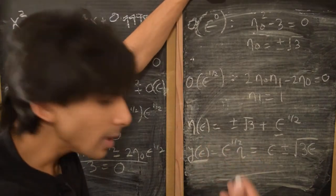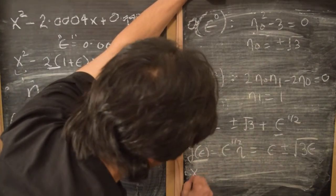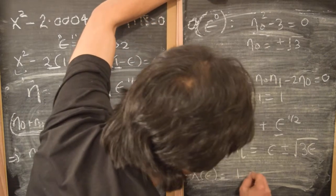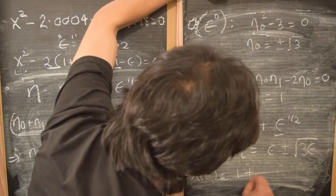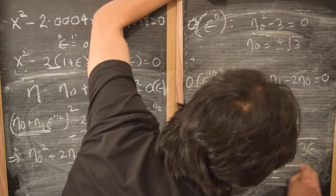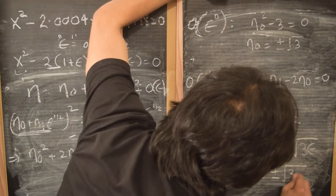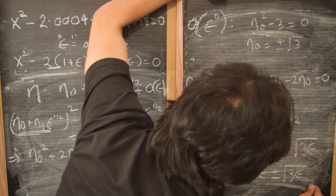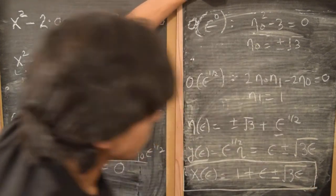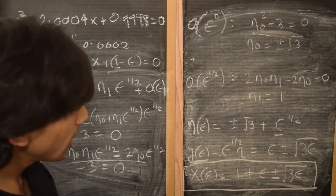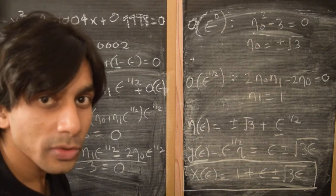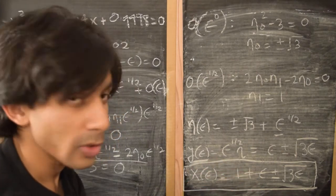Going one step back, we had defined y = x − 1, and therefore x = y + 1. So the overall solution is: x(ε) = 1 + ε ± √3·√ε. This is the perturbative series solution for x as a function of ε.